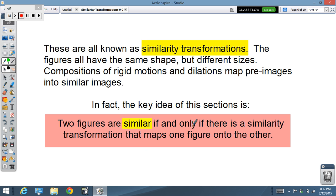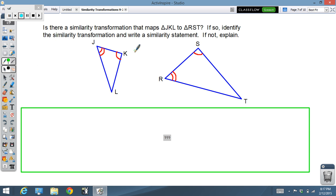Next, I'll give you the definitions. These are all similarity transformations. They all have the same shape, different sizes. Compositions of rigid motions together with dilations turn pre-images into similar images. In fact, the key idea of this section is two figures are similar if and only if there is some sort of a similarity transformation that turns one into the other.